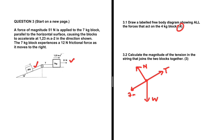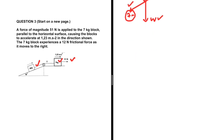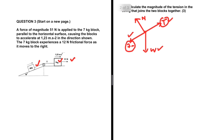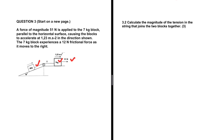Question 3.2: calculate the magnitude of the tension in the string that joins the two blocks. We actually can't use the 4 kg block to calculate the tension, because at this point we don't have the frictional force or the coefficient. But can we use the 7 kg block? Let's find out. We'll start with a free body diagram, because once you sketch a free body diagram it's easy to identify the forces and substitute correctly.